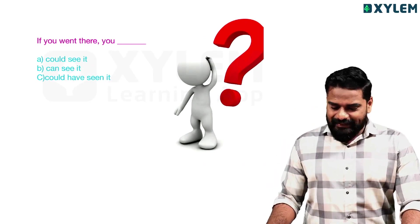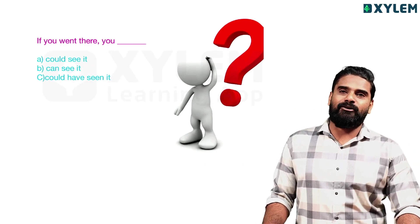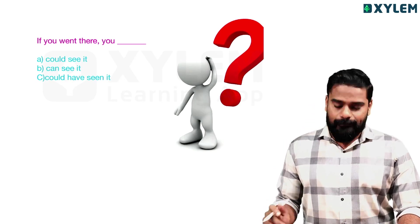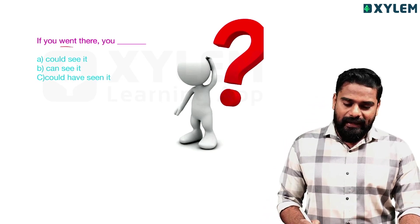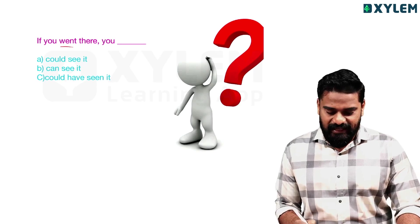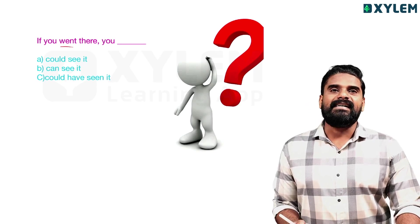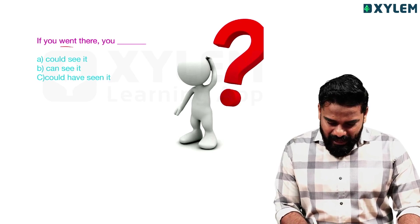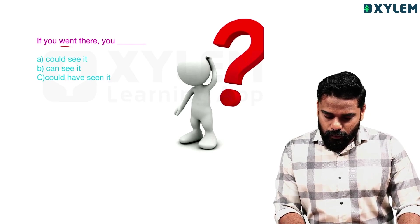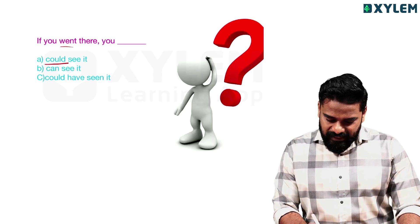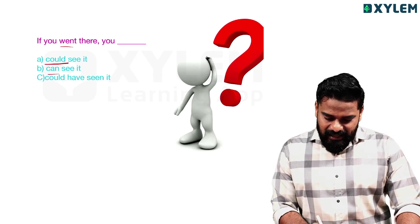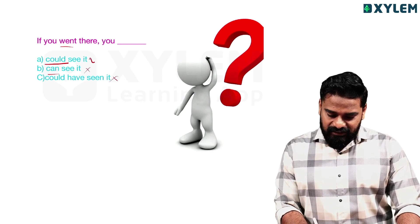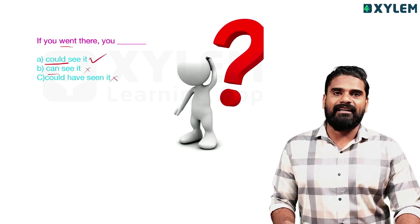Practice question: 'If you were there, you dash...' — if you went there, what is the tense? It's past tense, so that is the second condition. The answer is would, could, should, or might. Note: 'could' cannot be used for the first condition; 'could have' belongs to the third condition.